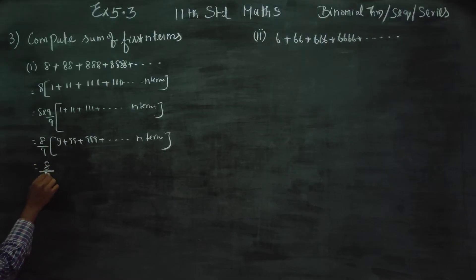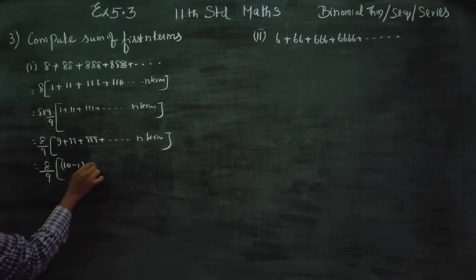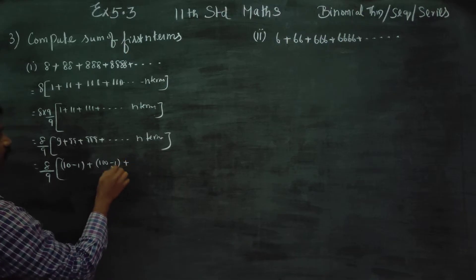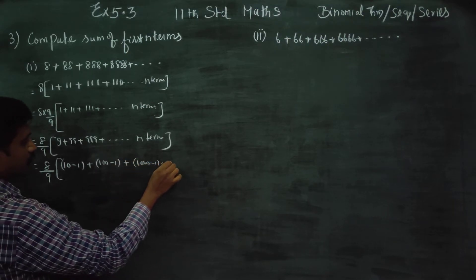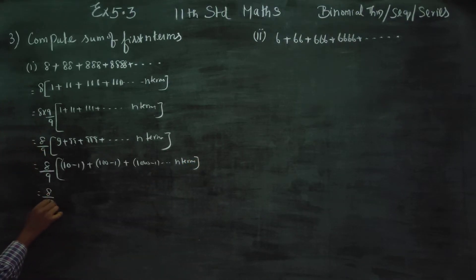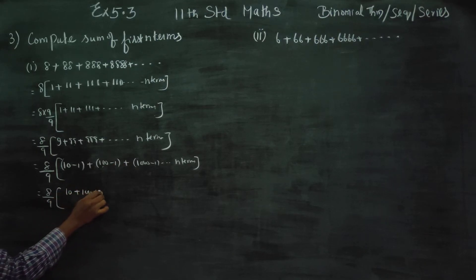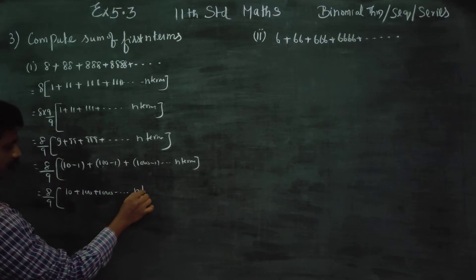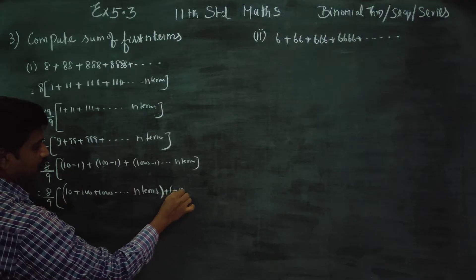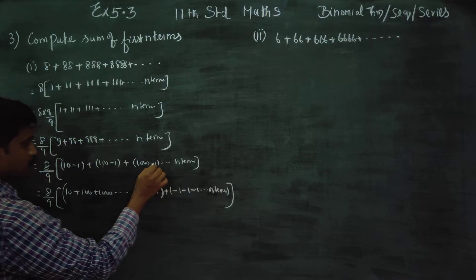Now, 8 by 9: rewrite each term — 9 can be written as 10 minus 1, 99 can be written as 100 minus 1, 999 can be written as 1000 minus 1, dot dot dot n terms. This gives us 10 plus 100 plus 1000 dot dot dot n terms as a common part.